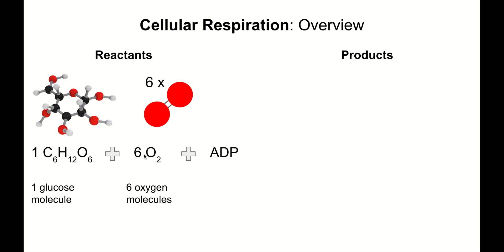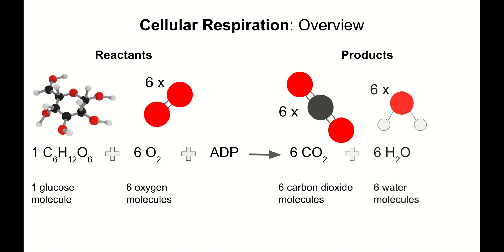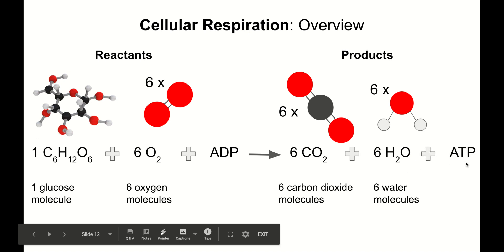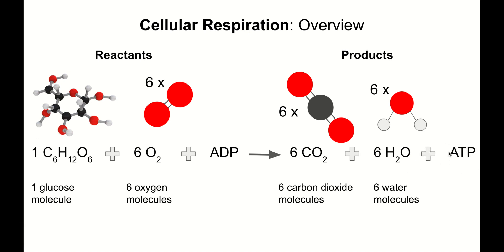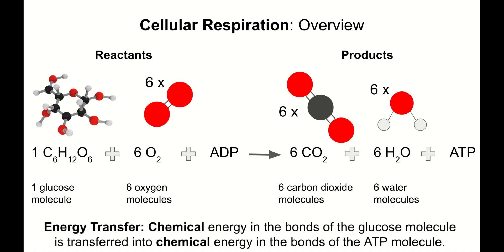These molecules are rearranged into our products: six CO2 or six carbon dioxide molecules, plus six H2O, six water molecules, plus ATP. This is our end goal. This is the good stuff right here. And just like in our photosynthesis overview, let's record the energy transfer as well. In cellular respiration, chemical energy in the bonds of the glucose molecule is transferred into chemical energy in the bonds of the ATP molecule. Take a moment, get all of the detail from this slide recorded.